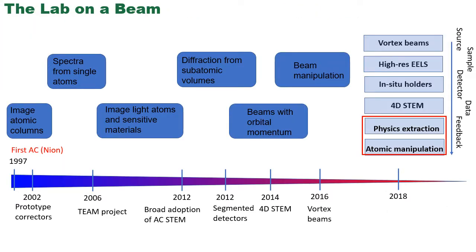Why are we interested in applying machine learning in electron microscopy? In the last 10 years or so, these techniques evolved from a mere imaging technique to a quantitative probe of structure and functionalities at the atomic level. The first aberration correctors appeared around 1997, introduced by NEON, allowing reliable imaging of atomic columns. In 2002, prototype correctors became available to the broad scientific community — this was the year I started at Oak Ridge and observed firsthand how the first correctors were installed on the 501 and 603 microscopes.